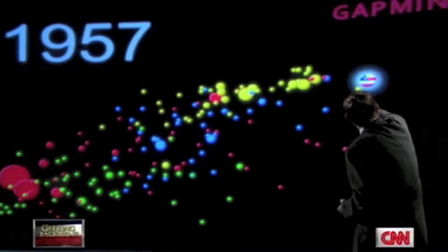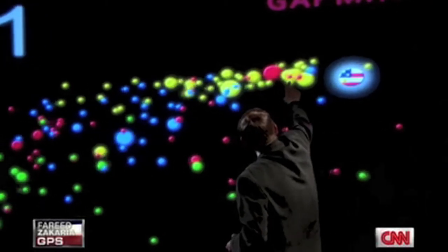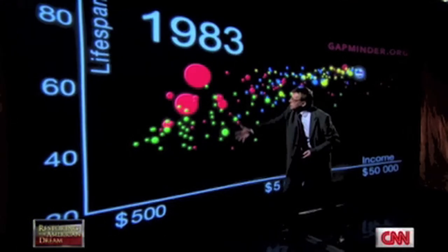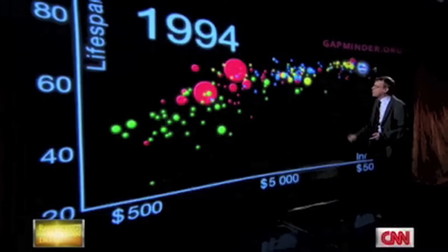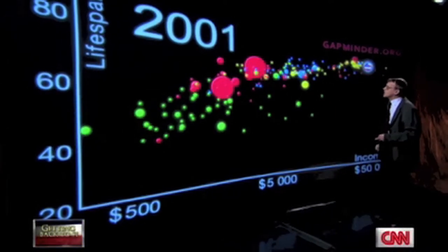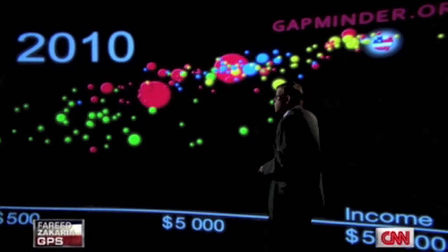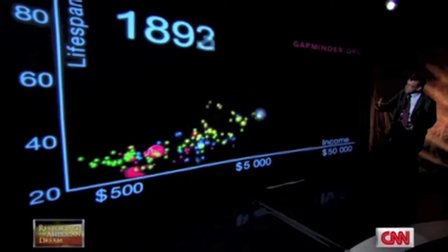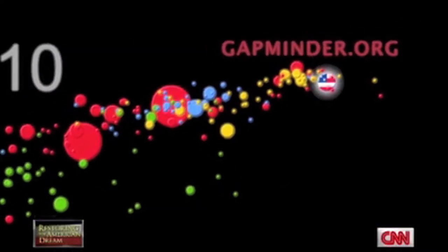The U.S. continued the lead, but Europe is closing in — Europe is closing in. And Japan made this amazing catch-up together with Singapore and other tiger economies in Asia. China and India got education, small families, and health before they started this amazing economic growth, catching up together with more and more emerging economies, keeping up the speed through the last economic crisis. And here we are today, 2010. Looking at the replay, you can see very clearly how the West took off first and then how the rest is following and catching up.